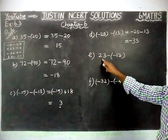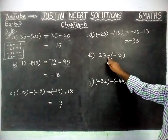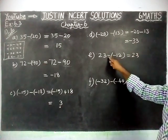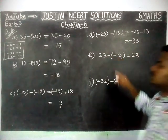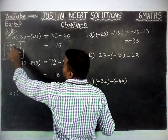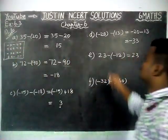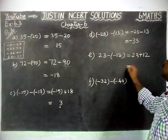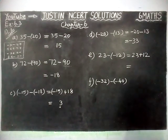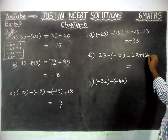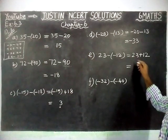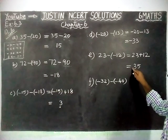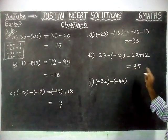Next, Part E: 23 minus minus 12 equals 23. Minus into minus — minus into minus equals plus — so minus of minus equals plus 12. Both are now positive numbers, so we add. 3 plus 2 equals 5, and 2 plus 1 equals 3. Both are positive numbers, so plus 35 is the correct answer.